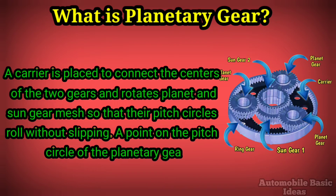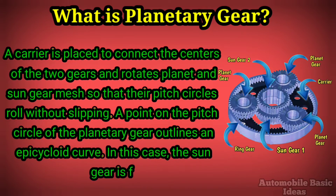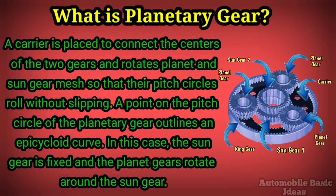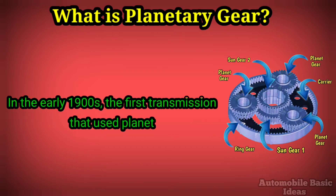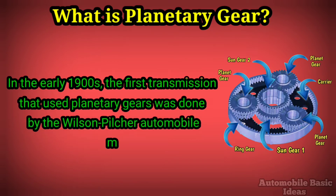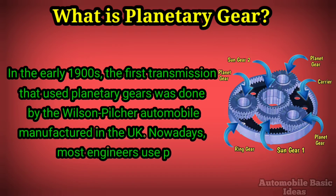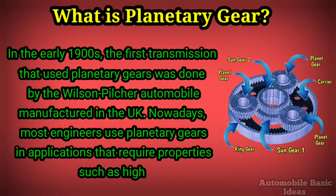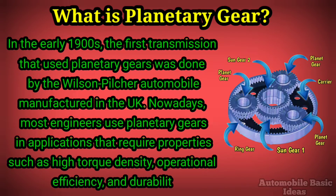A point on the pitch circle of the planetary gear outlines an epicycloid curve. In this case, the sun gear is fixed and the planet gears rotate around the sun gear. In the early 1900s, the first transmission using planetary gears was done by the Wilson Pilcher automobile manufactured in the UK. Nowadays, most engineers use planetary gears in applications requiring high torque density, operational efficiency, and durability.